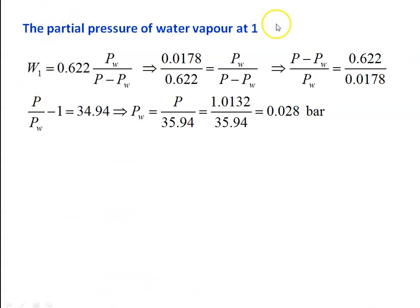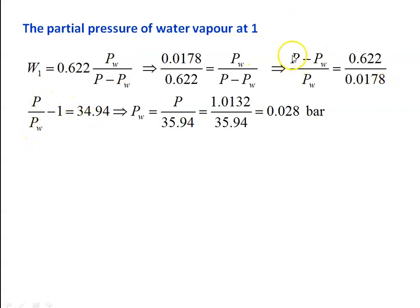The partial pressure of vapor at T1: from W1 = 0.622 × Pw / (P − Pw), rearranging gives 1.0132 / Pw − 1 = 0.622 / 0.0178 = 34.94, so Pw = P / 35.94 = 1.0132 / 35.94 = 0.028 bar. Thus the partial pressure of water vapor is 0.028 bar.